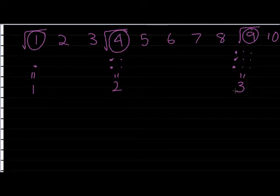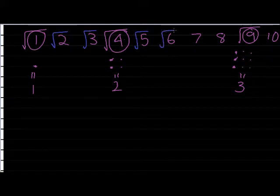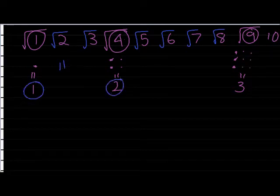The problem comes in now when I want to take the square roots of other numbers. For example, the square root of 2, the square root of 3, the square root of 5, 6, 7, and 8. I know that this answer, the square root of 2, must be somewhere between 1 and 2.